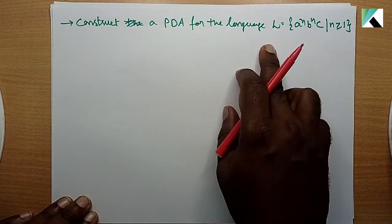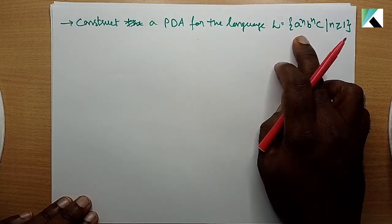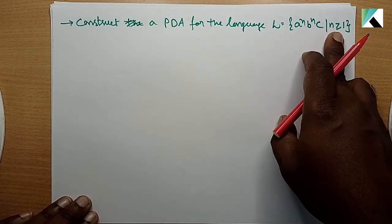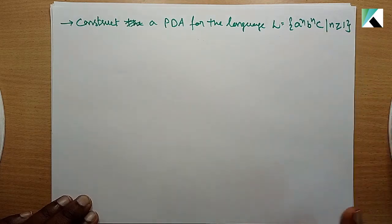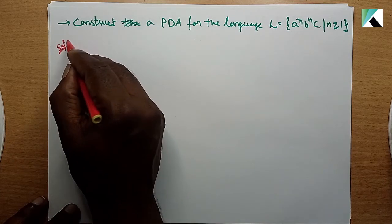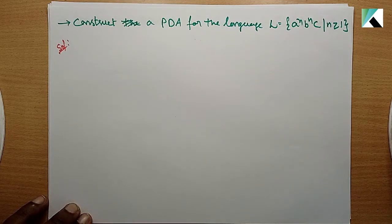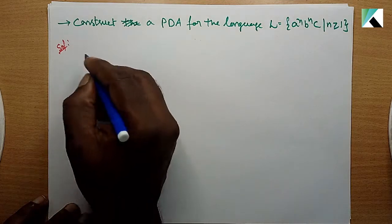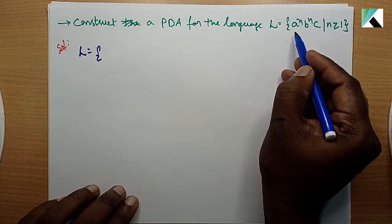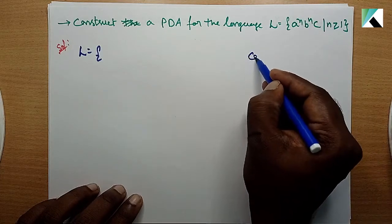Construct a PDA for the language L equals A power N, B power N, C where N greater than or equals to 1. First, one more solution. The language is defined with conditions.